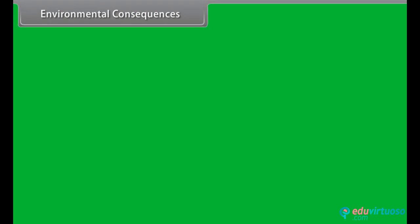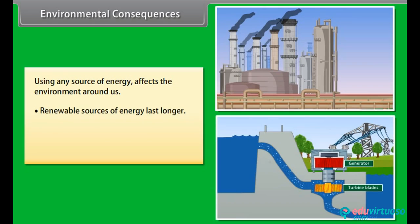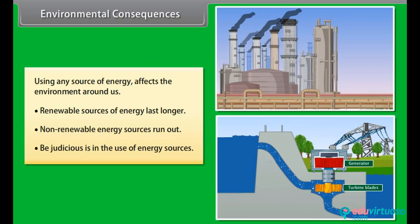Environmental consequences. Using any source of energy affects the environment around us. Therefore, before exploiting any energy source, ensure that it does not disturb the environmental balance and is harnessed judiciously. Renewable sources of energy last for as long as they keep generating, whereas non-renewable energy runs out. We have to be judicious in our selection of energy, the purpose of the energy being used, and the actual usage of the energy.